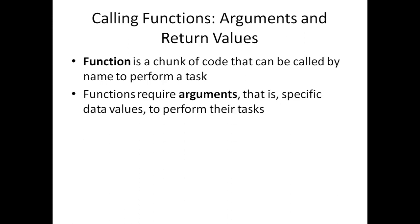When we call these functions, certain data values may be required by the function. These data values are known as arguments. To perform these tasks, we may have to supply some data value. For example, with the round function, we have to supply some value like 7.563 — some data value should be supplied. Then only it will be rounded to a particular decimal point. These data values are known as arguments.